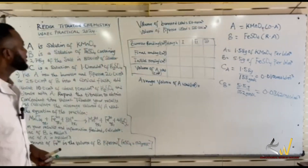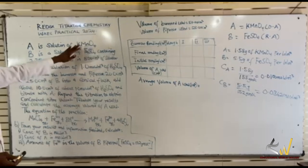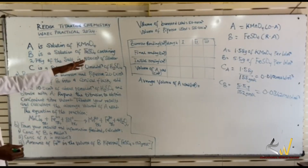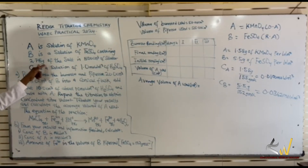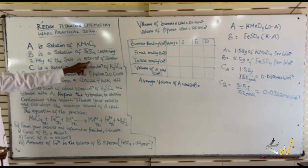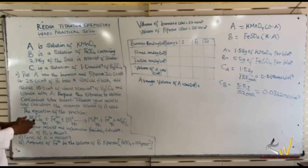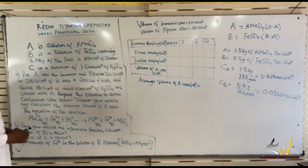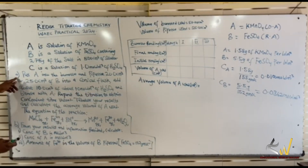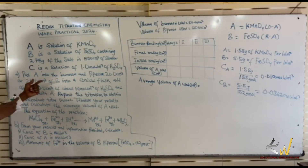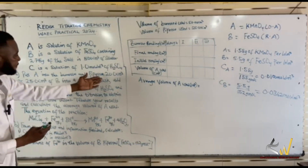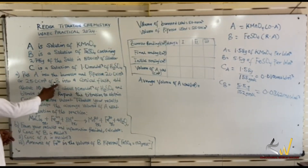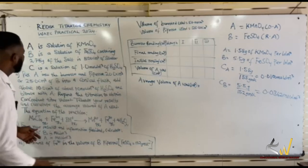Solution A is a solution of potassium permanganate, and solution B is a solution of iron(II) sulfate containing 2.75 grams of the salt in 500 cm³ of solution. Solution C is a 1.0 mol/dm³ solution of H2SO4. Put solution A into the burette and pipette 25.0 cm³ of B into a conical flask.